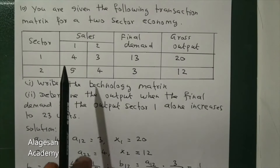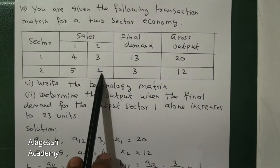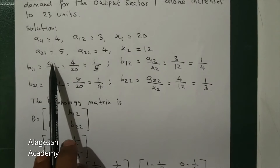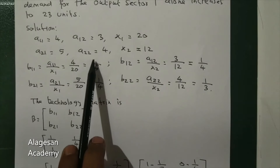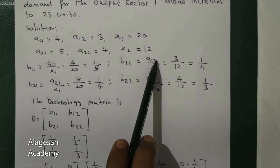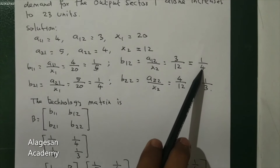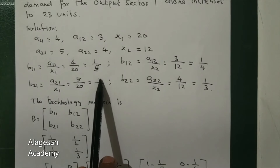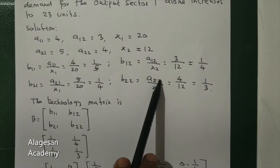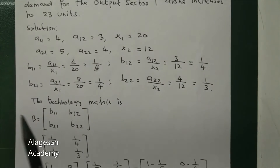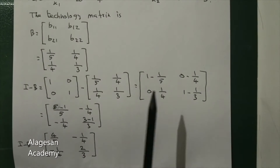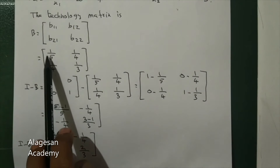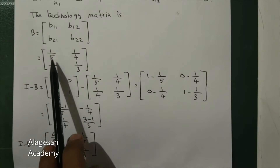We have the elements a11, a12, a21, a22 and gross outputs x1, x2. Using these, find the technology matrix: b11 = a11/x1 = 4/20 = 1/5; b12 = a12/x2 = 3/12 = 1/4; b21 = a21/x1 = 5/20 = 1/4; b22 = a22/x2 = 4/12 = 1/3. Substitute these values to form the technology matrix B = [[b11, b12], [b21, b22]].